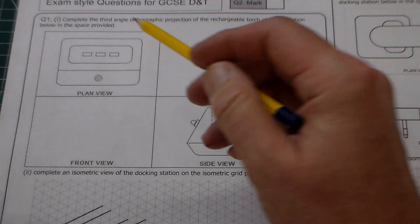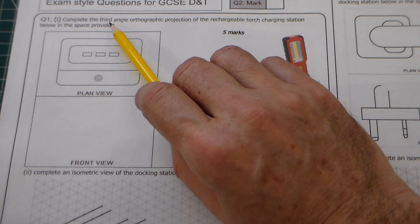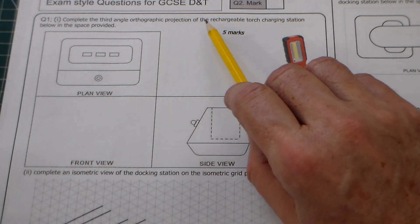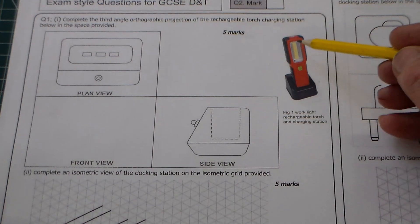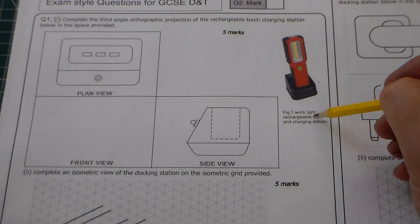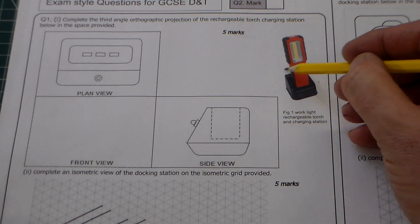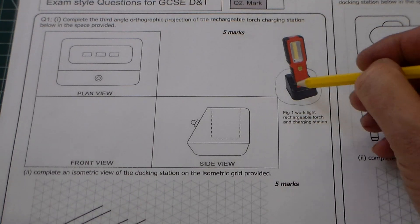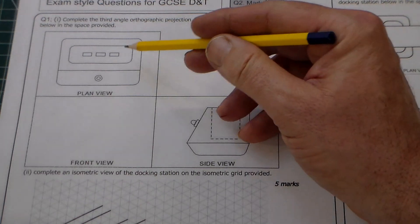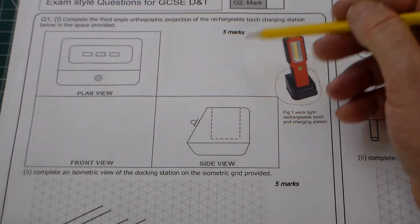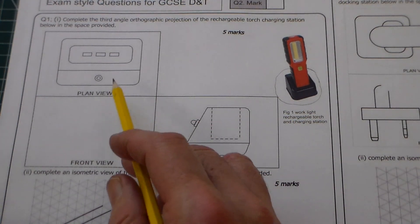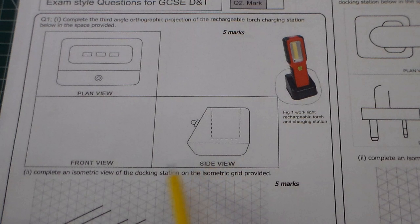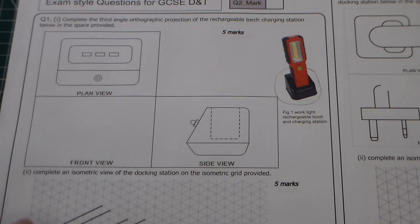Right, question one. Question one says complete the third angle orthographic projection of the rechargeable torch charging station below in the space provided. So you can see there, there's figure one, and you can see what we're actually looking at is something like this, the base that it slots into. So we've got a slot there, slot there that the torch fits into. So what it's asking is basically we've got a plan view here, a side view, and we just have to add the front view.